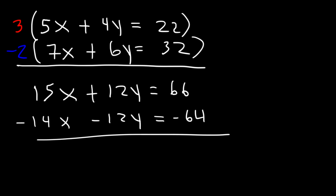Now let's go ahead and add the two equations. 12y and negative 12y will cancel — they add up to 0. 15x plus negative 14x is 1x. And 66 minus 64 is 2. So therefore, x is equal to 2.